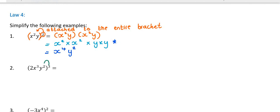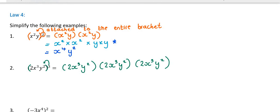The next question: this cubed is attached to the bracket, so the entire bracket of 2x³y² is cubed — multiplied by itself three times. When you multiply things together: signs, numbers, variables. Numbers: 2 times 2 is 4, times 2 is 8. For the variables, I have x cubed, x cubed, and x cubed. When I multiply powers at the same base I add exponents — not multiply — so I get x to the power of 9. And y squared, y squared, y squared — add exponents — gives y to the power of 6. When in doubt, write it out.